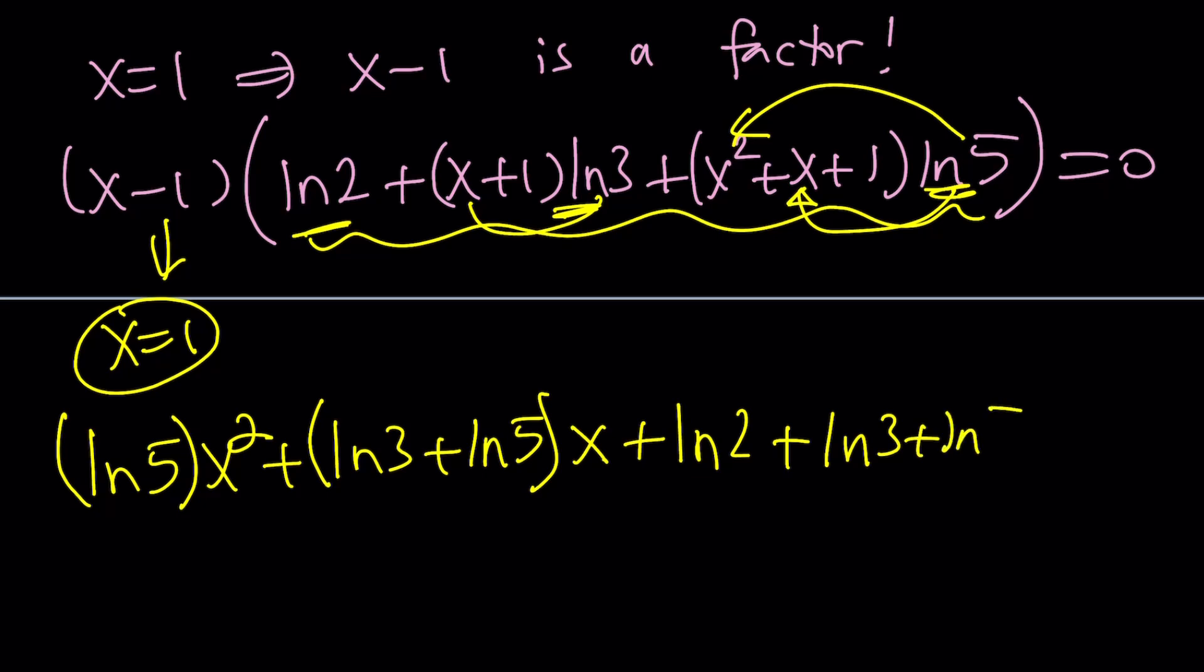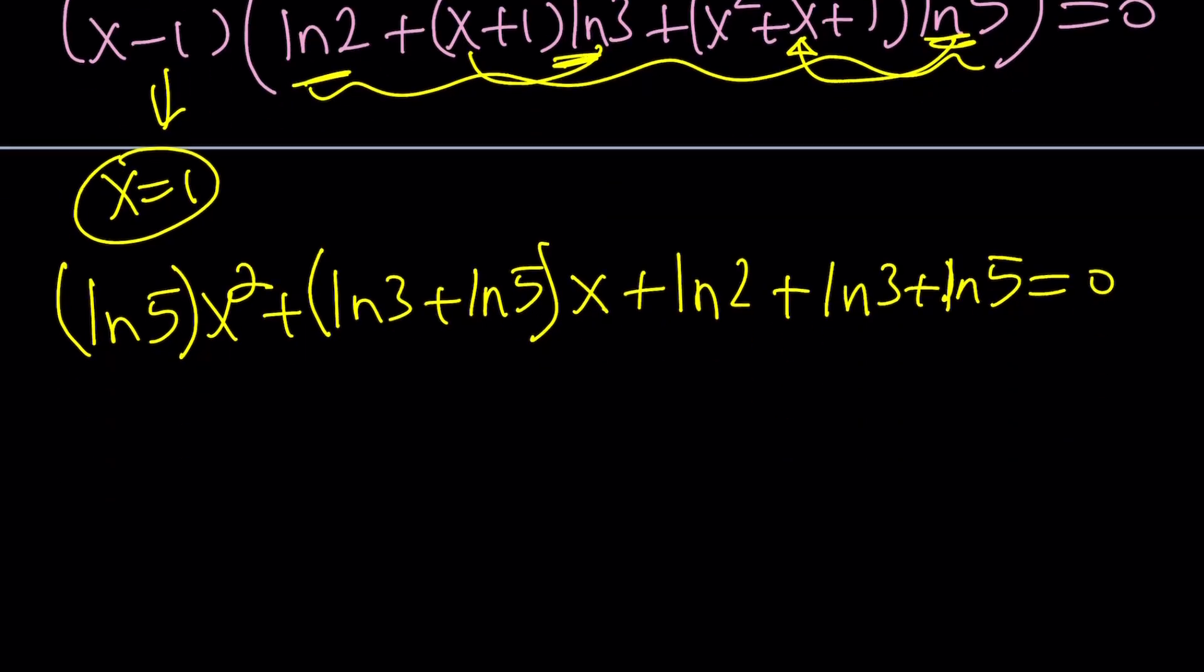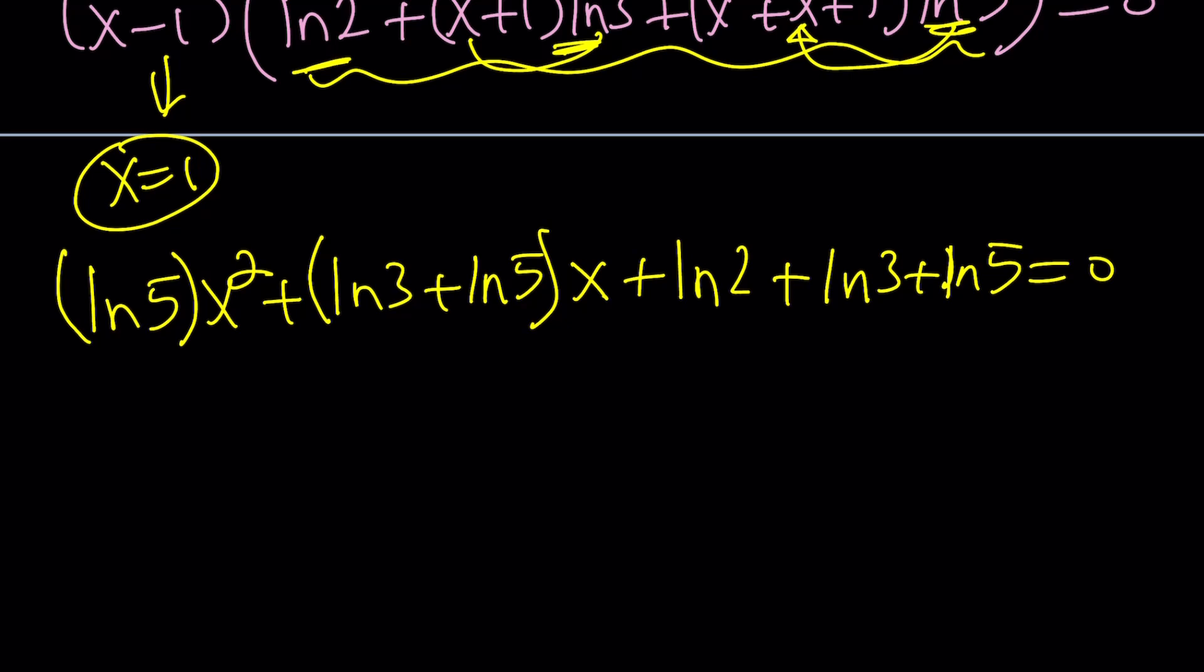And that kind of makes sense because Vieta's formulas tell us that the product of the roots is negative the last coefficient, the constant term, divided by a, which is the coefficient of x cubed. And one of the roots is 1, so the product is not affected. Make sense? Okay. Good. Cool. Of course, a in this case is ln 5. Because, is it? Anyways, you get the idea.